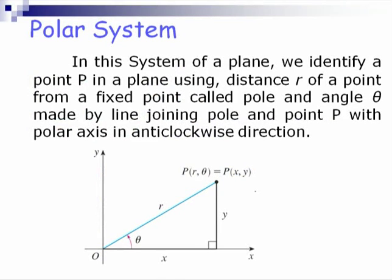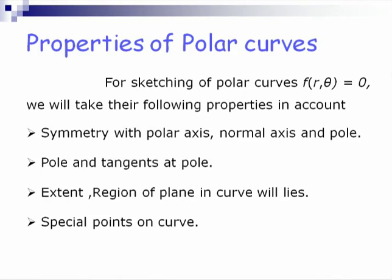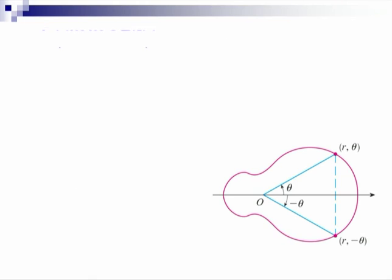Starting with sketching of polar curves — as we discussed earlier, what a polar system is and how a point can be described in polar coordinates, as well as the relation between polar and cartesian coordinates. The properties we need to trace a polar curve are: symmetricity with respect to polar axis, normal axis, and pole; pole and tangents at pole; extent and region where the curve will lie; and special points on the curve.